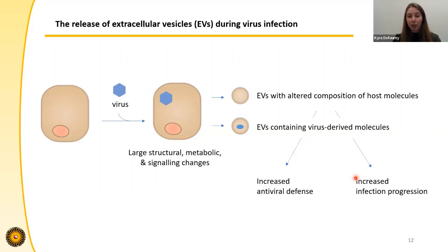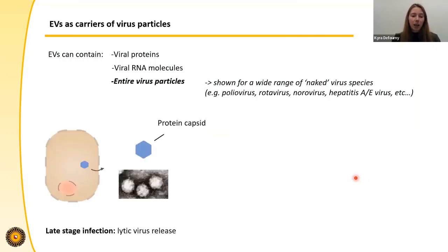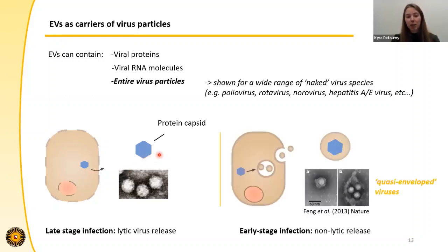This topic from start to finish is what we as a group study. But for my PhD, I was particularly interested in the release of EVs containing virus-derived molecules. When we talk about EVs containing viral material, we can talk about viral proteins, RNA molecules, or even entire intact virus particles as EV cargo. This has been especially shown for a wide range of so-called naked virus species — a category of viruses that consist solely of a protein capsid containing a viral genome. Because of their structure, many of these viruses were long believed to require induction of host cell lysis to escape the host cell and initiate virus spread.